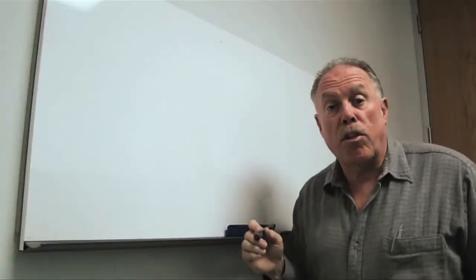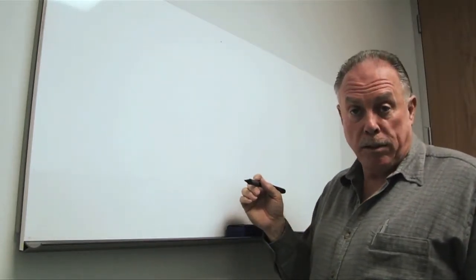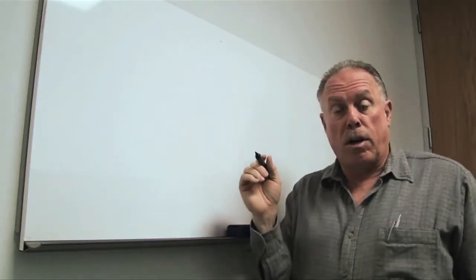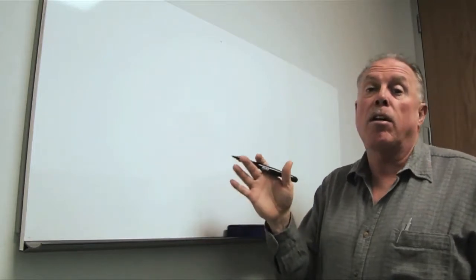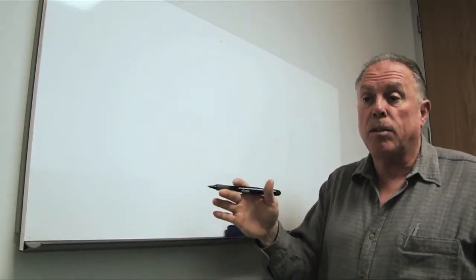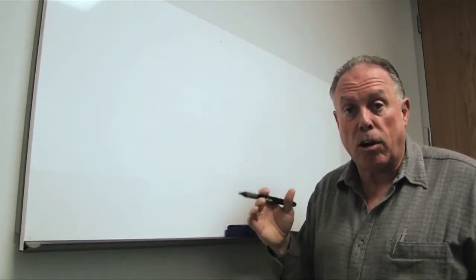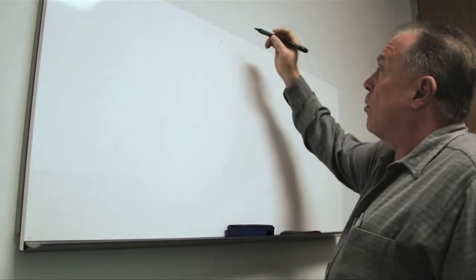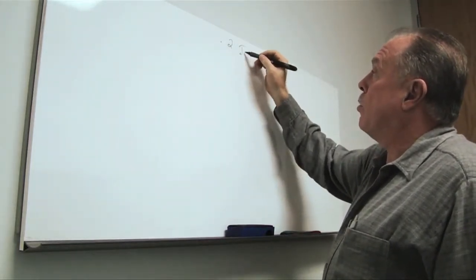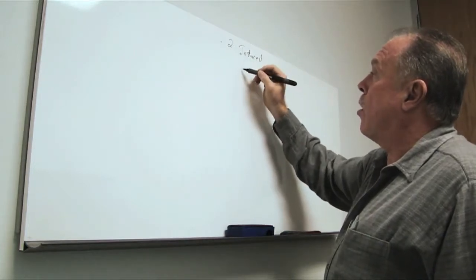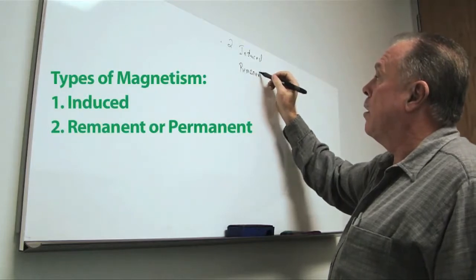We have a rule of thumb regarding the distance at which we can see an object. These rules are based on induced magnetics only, and so I'm going to define what induced magnetism is and what these numbers mean in terms of depth and mass of the target we're looking for. There are two types of magnetism: one is called induced and the other is called remnant or permanent.